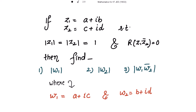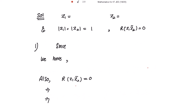Let's start with the solution. It is given that z1 is equal to a plus iota b and z2 is equal to c plus iota d, and their moduli are equal to 1. Since mod of z1 is equal to 1, this implies z1 is equal to e to the power iota theta 1, where theta 1 is the argument of z1. And for mod z2 equal to 1, we have z2 equal to e to the power iota theta 2, where theta 2 is the argument of z2.